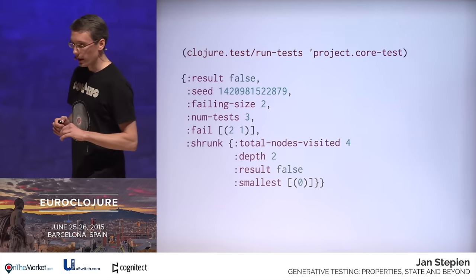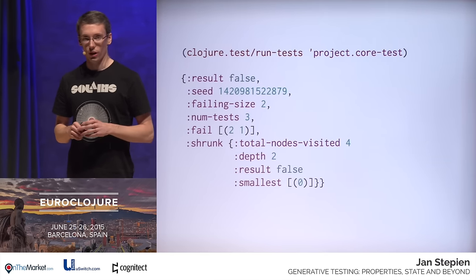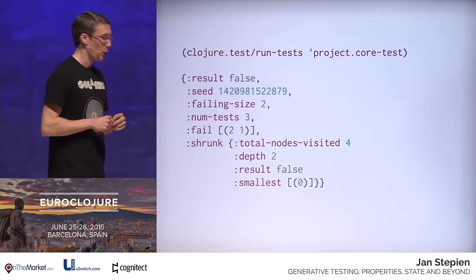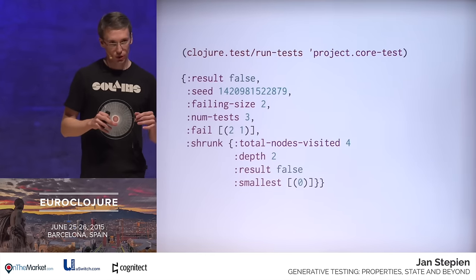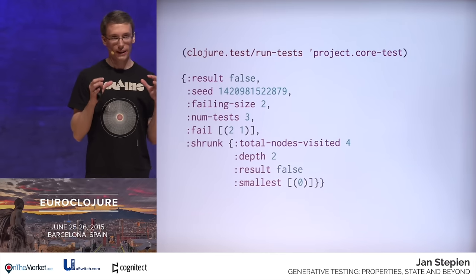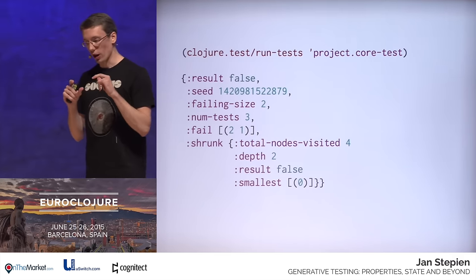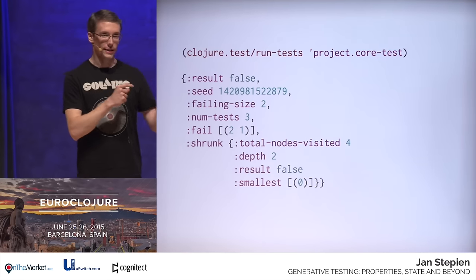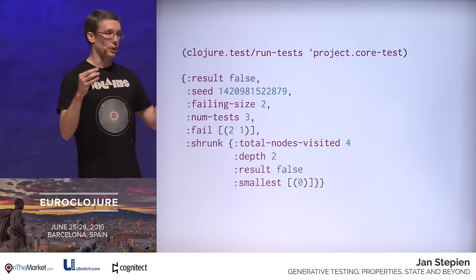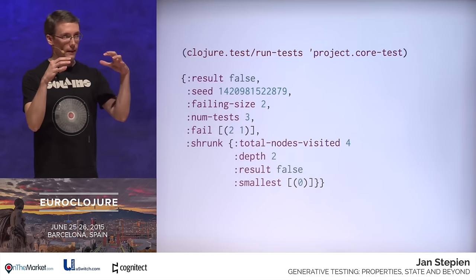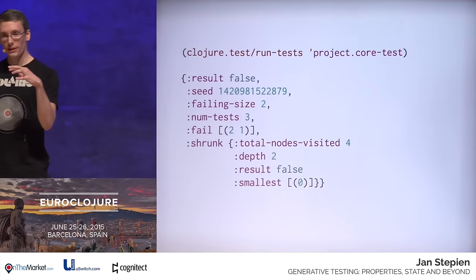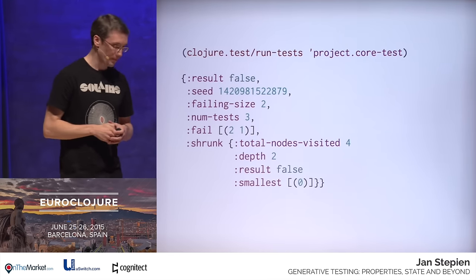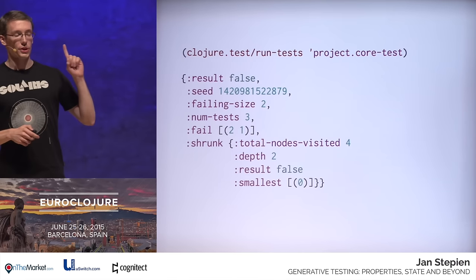This time, TestCheck found a different test case — a different failing scenario: a list containing 2 and 1. Now let's take a look at the part of the map I've been ignoring so far — the `shrunk` sub-map. `shrunk` contains the result of the so-called shrinking procedure. Shrinking is minimizing the failing test value. After QuickCheck — specifically TestCheck — finds a value for which the test does not hold, it uses certain properties of generators to make those values smaller and smaller, minimizing them to find the minimal value for which the test fails.